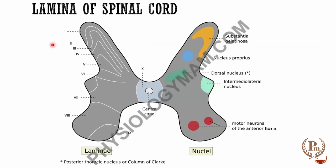We'll go one by one. Please make a note of it — it's worth remembering. Although you'll be learning more in anatomy, in physiology we also need to know what these laminas are. Lamina one is actually a thin marginal layer, and it has neurons which respond to pain. This is the thin marginal layer you see here, with neurons that respond to pain.